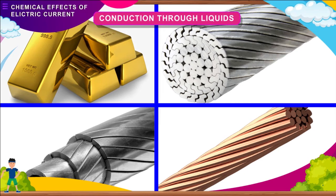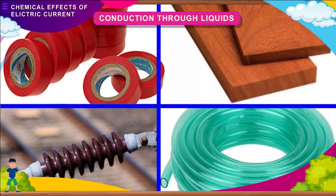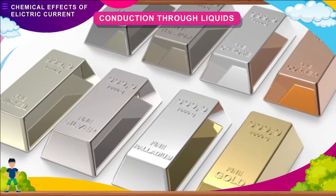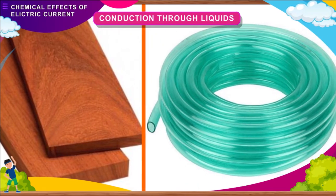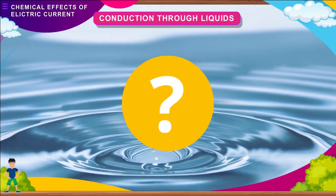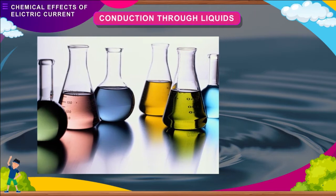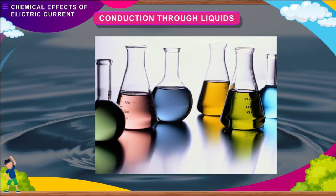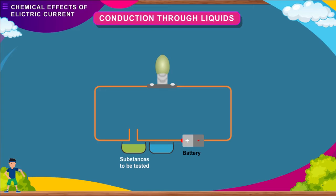Conduction through liquids: Some substances allow electricity to pass through them — these are called conductors — while those which do not are called insulators. All metals are generally good conductors of electricity, whereas substances like air, wood, and plastic are examples of insulators. Some liquids are good conductors of electricity and some are poor conductors. Most liquids that conduct electricity are solutions of acids, bases, and salts. Here is an activity to make a tester for conductors and insulators.